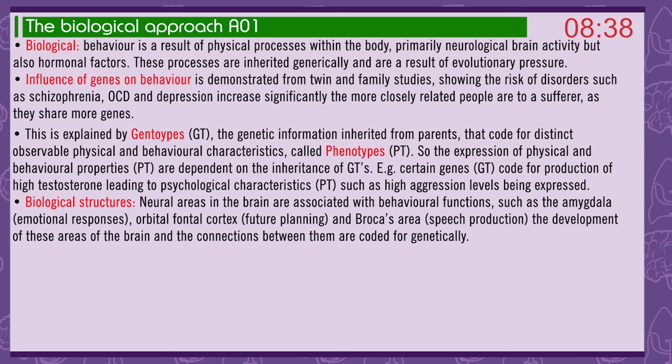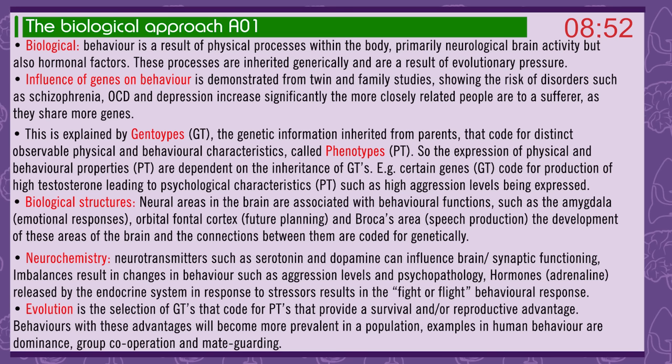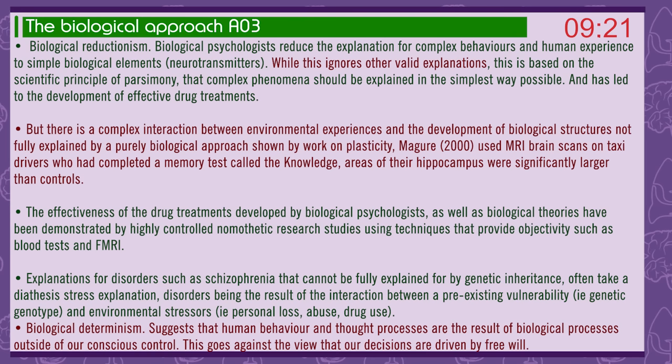Biological structures: neural areas in the brain are associated with behavioural functions, such as the amygdala — emotional responses — the orbitofrontal cortex — future planning — and Broca's area — speech production. Neurochemistry: neurotransmitters such as serotonin and dopamine can influence brain synaptic functioning; imbalances result in changes in behaviour such as aggression levels and psychopathology. Hormones like adrenaline, released by the endocrine system in response to stress, result in the fight-or-flight response. Evolution is a selection of genotypes coding for phenotypes that provide a survival or reproductive advantage — examples in human behaviour include dominance, group cooperation, and mate guarding.